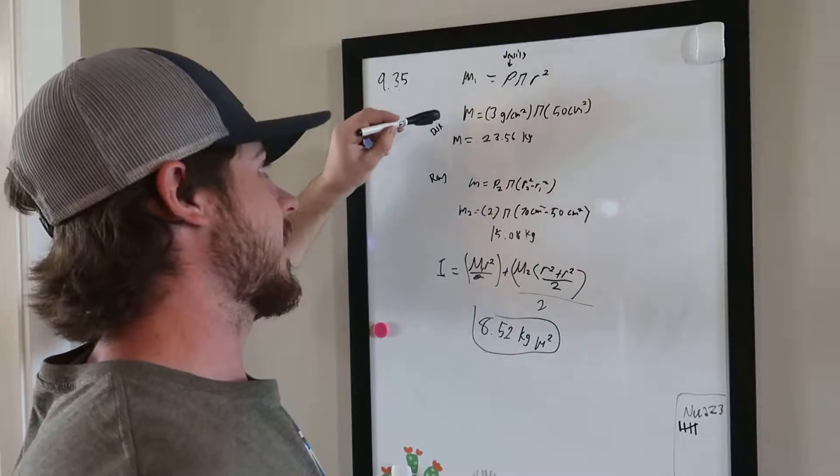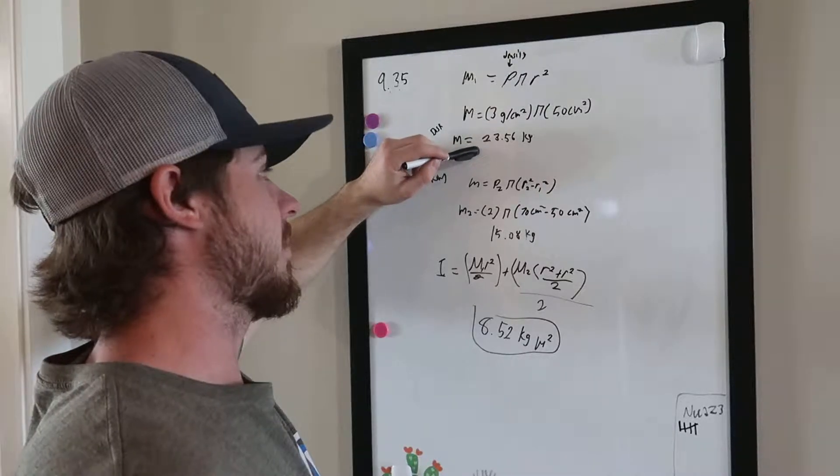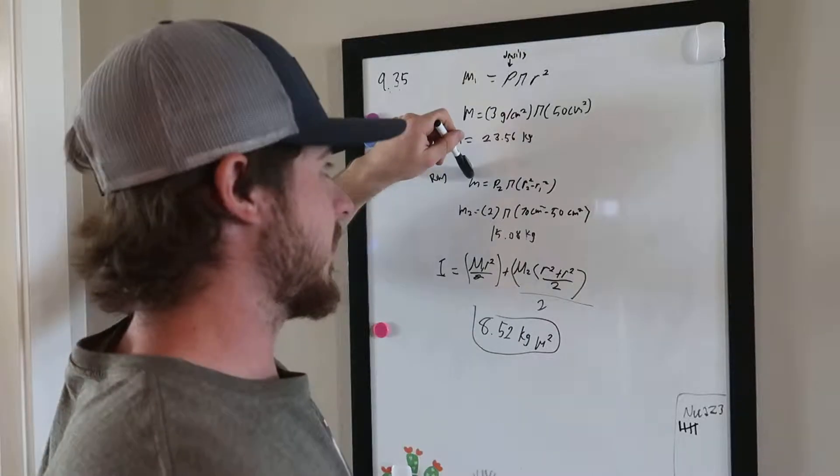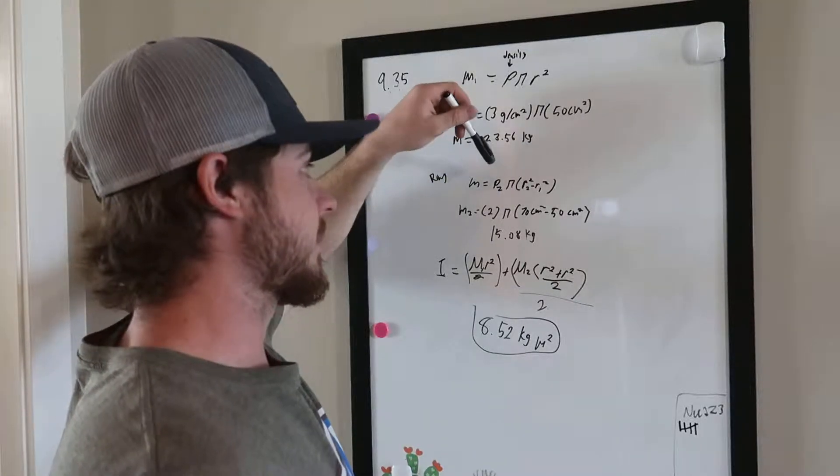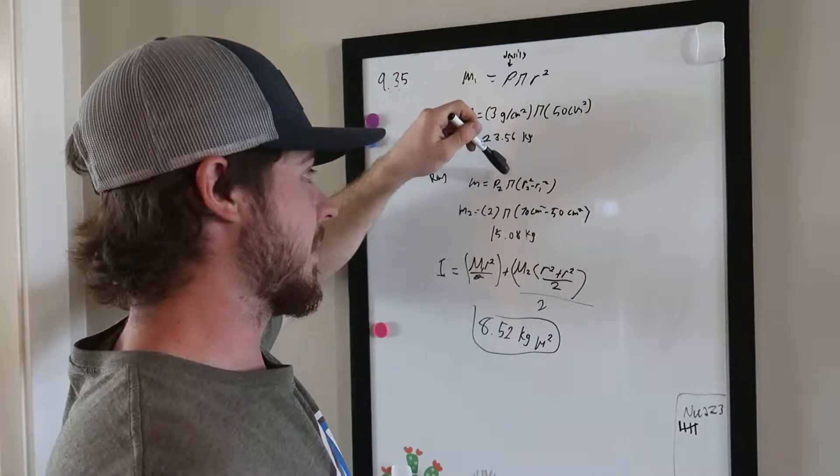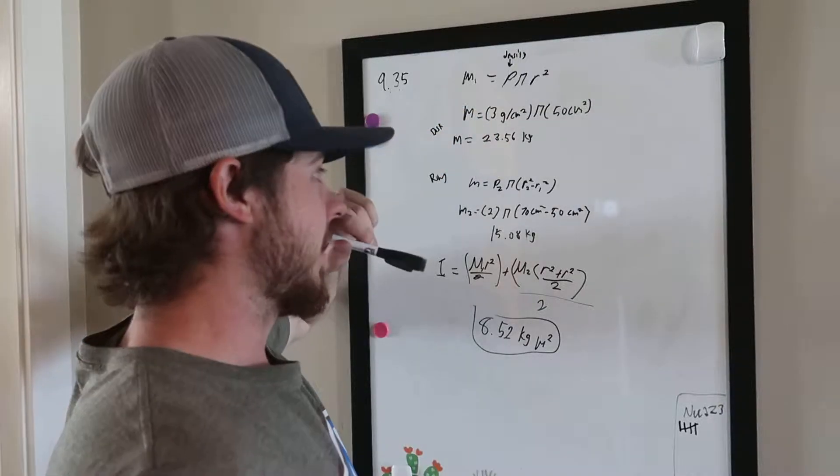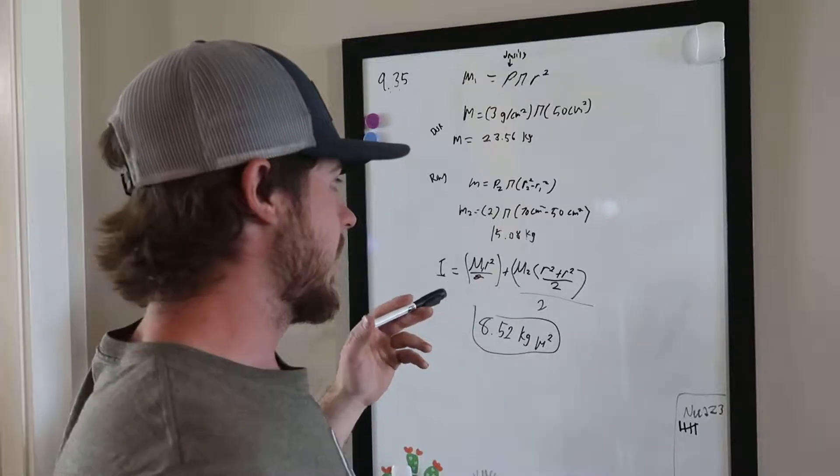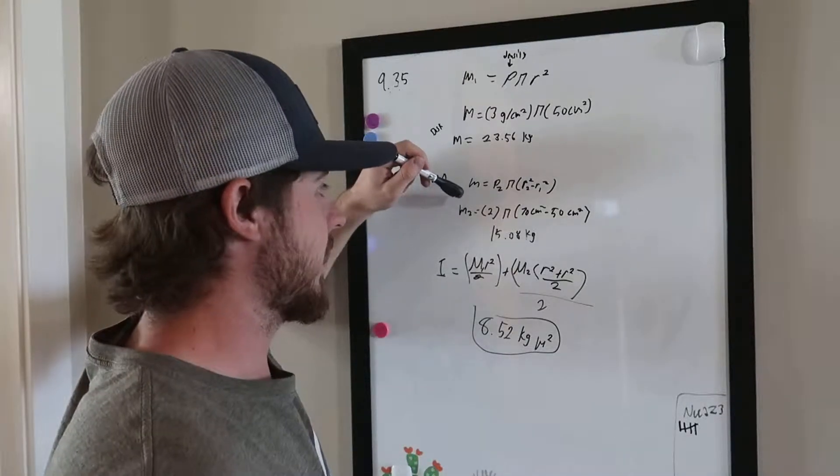The mass of the disk is 23.56 kilograms. The ring mass uses the same equation, so we get the density of the ring multiplied by π multiplied by r₂ squared minus r₁ squared. When we plug that in, 2 times π times 70 centimeters squared minus 50 centimeters squared,